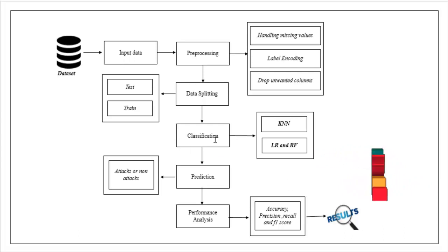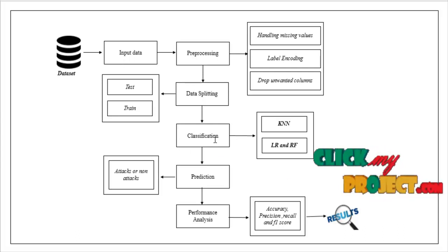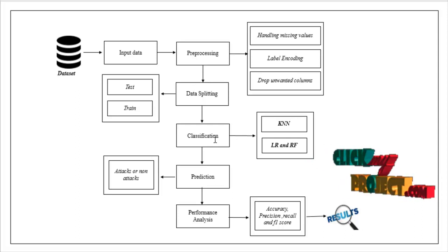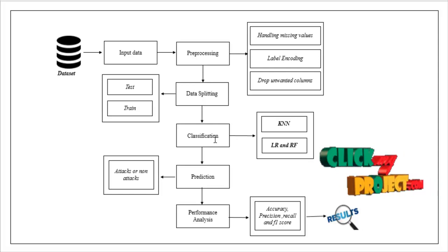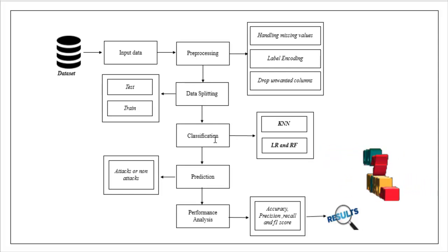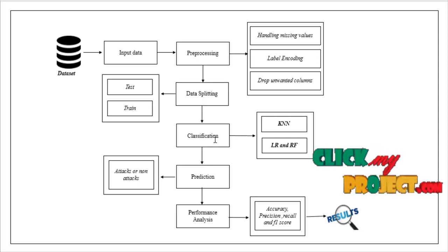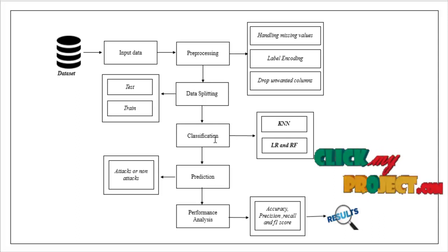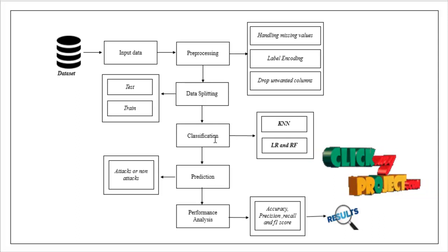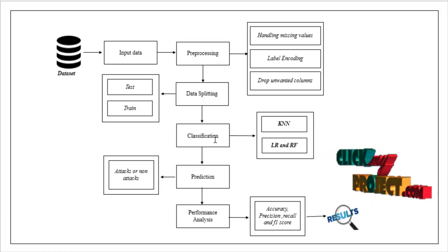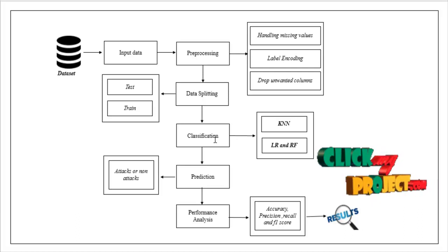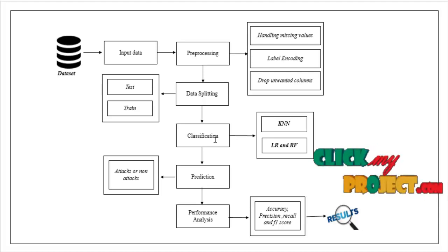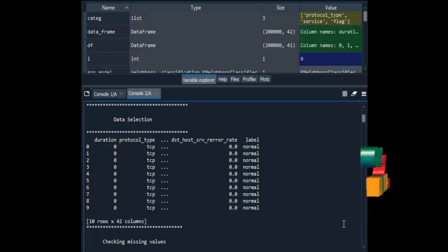We implement classification algorithms using machine learning methods: K-nearest neighbor, logistic regression, and random forest. After that, we predict the objective — intrusion attacks or non-attacks in network traffic. We then find performance metrics such as accuracy, precision, recall, and F1 score. This is the complete flow of our process.